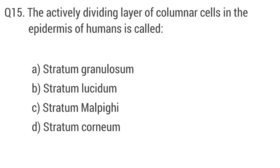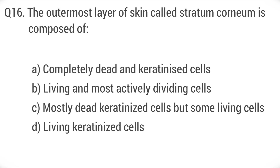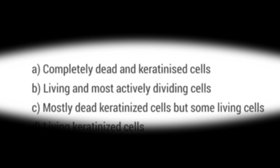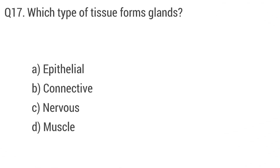Question 15: The actively dividing layer of columnar cells in the epidermis of humans is called? The right answer is option C: stratum malpighii. Question 16: The outermost layer of skin called stratum corneum is composed of? The right answer is option A: completely dead and keratinized cells.